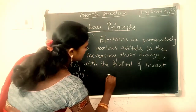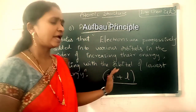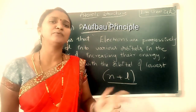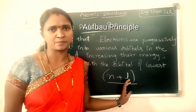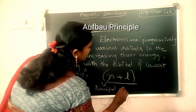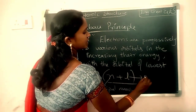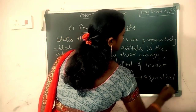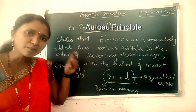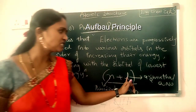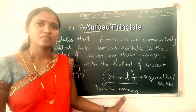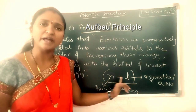But how can we know the energies of the orbitals? We can determine orbital energies by using the formula of the n plus l value. Here n equals the principal quantum number and l is the azimuthal quantum number. By adding these two values, we get the energy of the orbital.